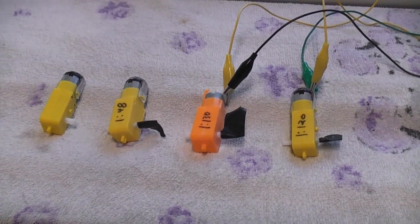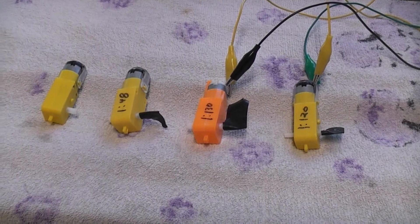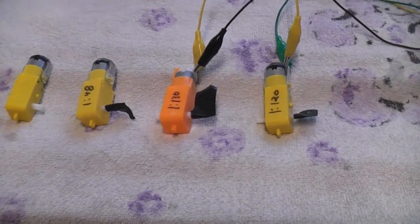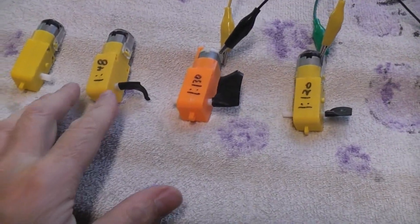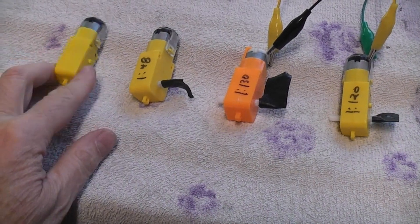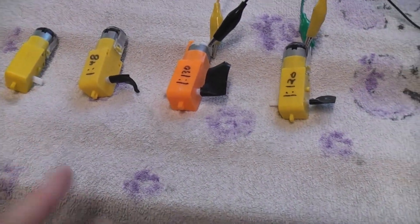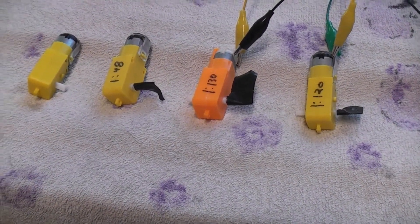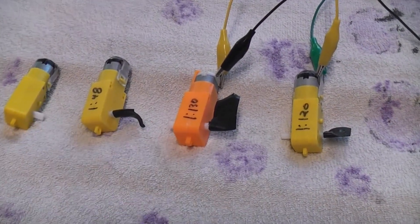This will be a short video on some of the different types of TT gear motors that you can order. You can get them in dual shaft or single shaft, but there seem to be four main gear ratio differences you can get.